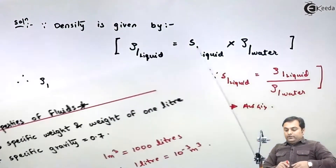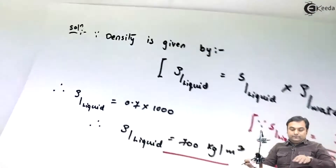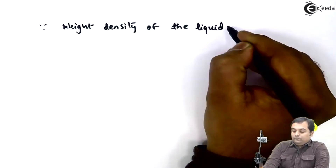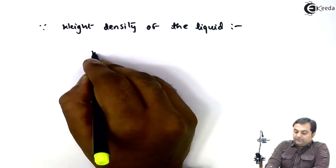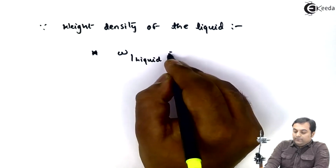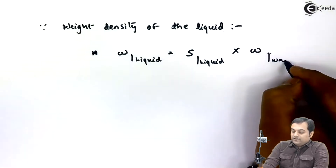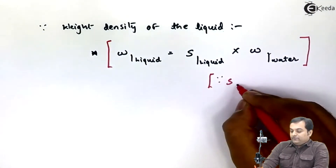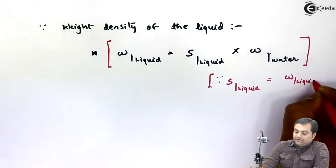Next, we have to calculate the weight density of the liquid. The weight density, denoted by small w, can be calculated using the specific gravity relation: weight density of the liquid equals specific gravity of the liquid into the weight density of the standard liquid, which is water. This comes from: specific gravity equals weight density of liquid divided by weight density of water.